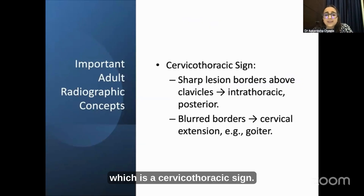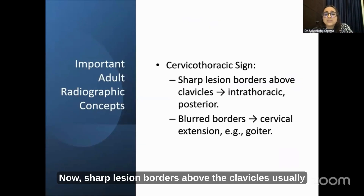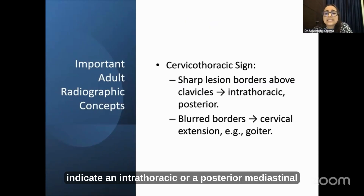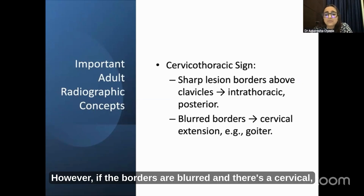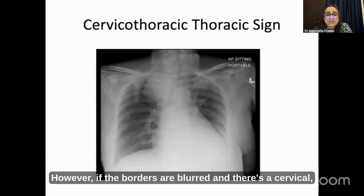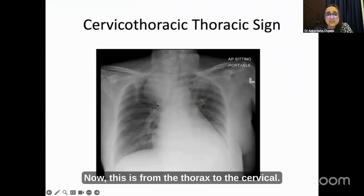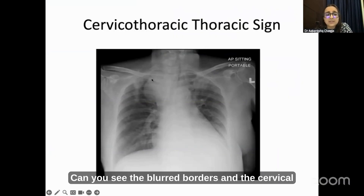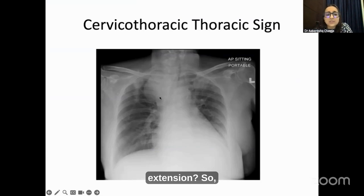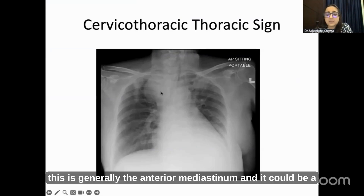Coming on to the cervicothoracic sign — sharp lesion borders above the clavicles usually indicate an intrathoracic or posterior mediastinal lesion. However, if the borders are blurred and there is a cervical extension from the thorax to the cervical region, with blurred borders and cervical extension, this is generally the anterior mediastinum and could be a goiter.